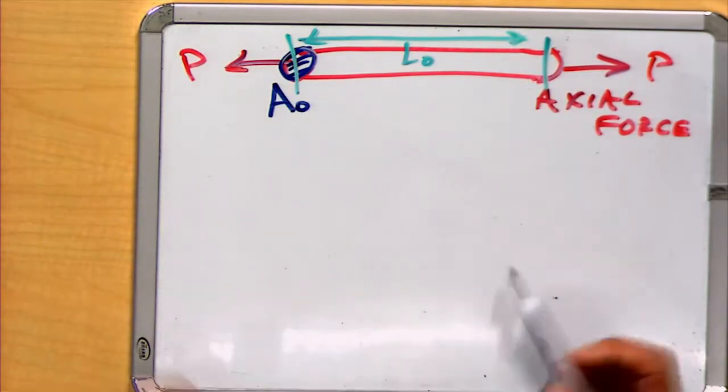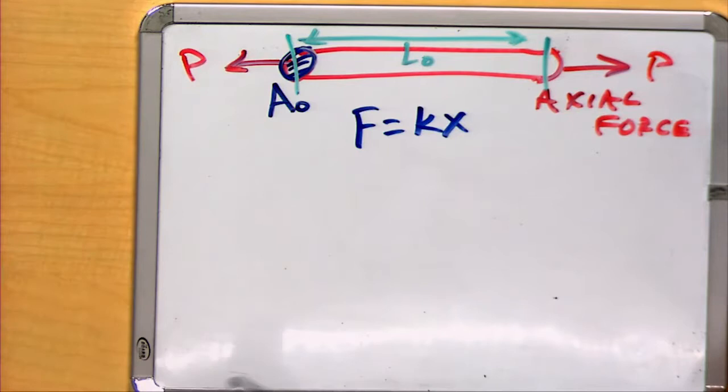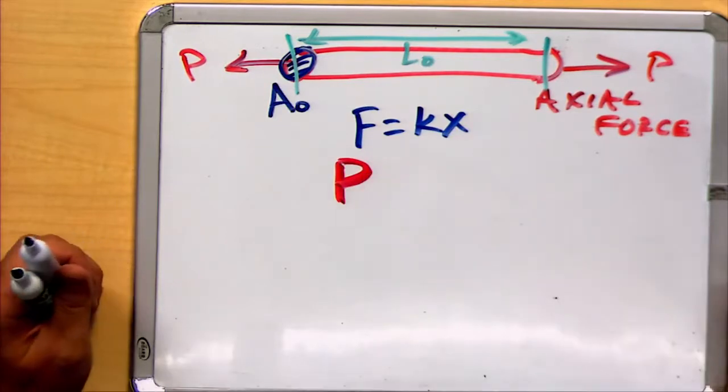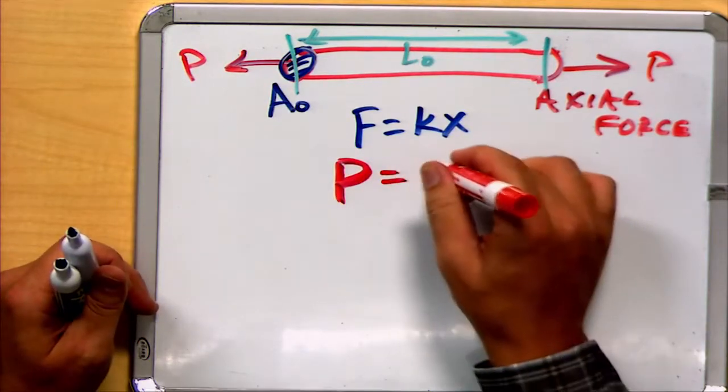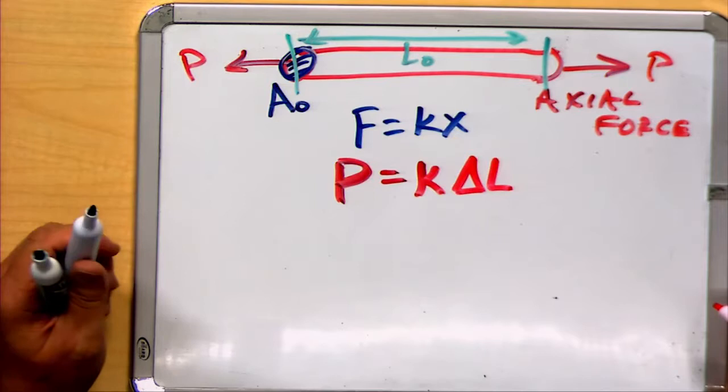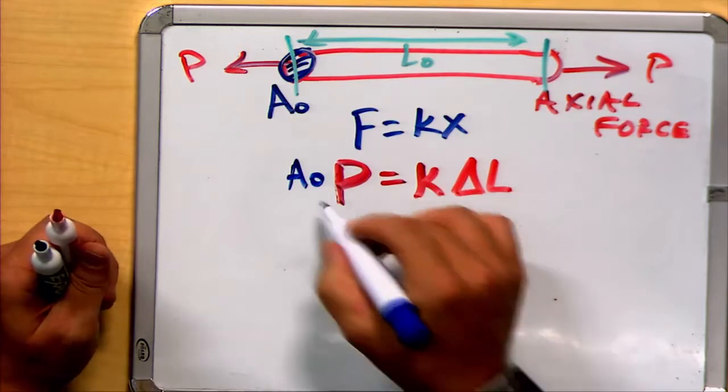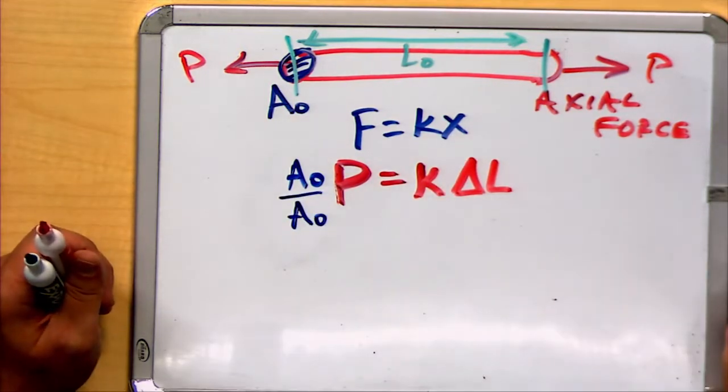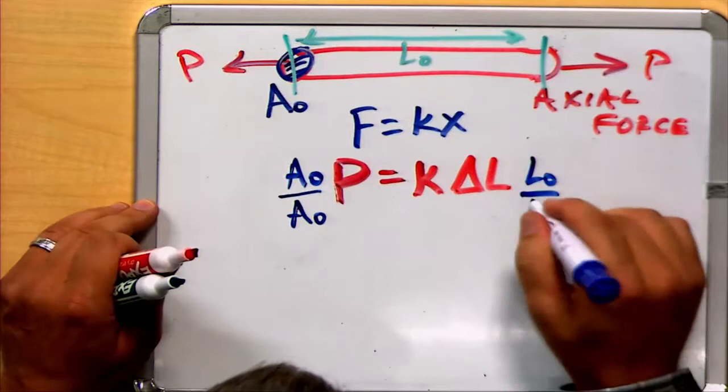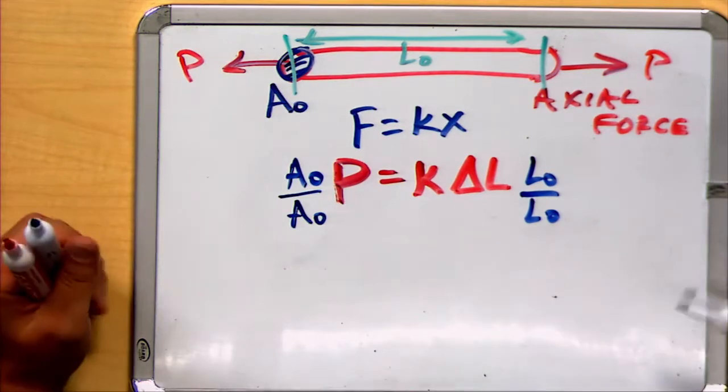Well, if we think about Hooke's law, F equals kx. And now let's replace some of these pieces. Our force here is the axial force p that we're applying. And our displacement x, we'll rewrite as delta L, the change in the length. I'm going to multiply the left side by the value A-naught, and then immediately divide it again by the value A-naught. I'm going to do a similar thing on the right side. Notice this doesn't change the value of the equation, because I'm essentially multiplying each side by 1.